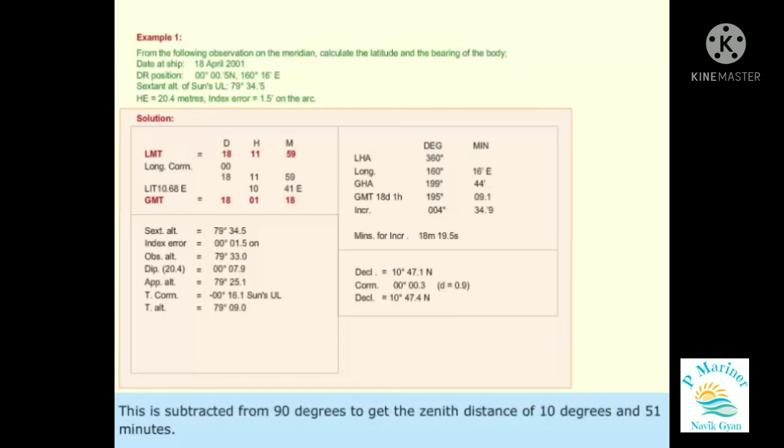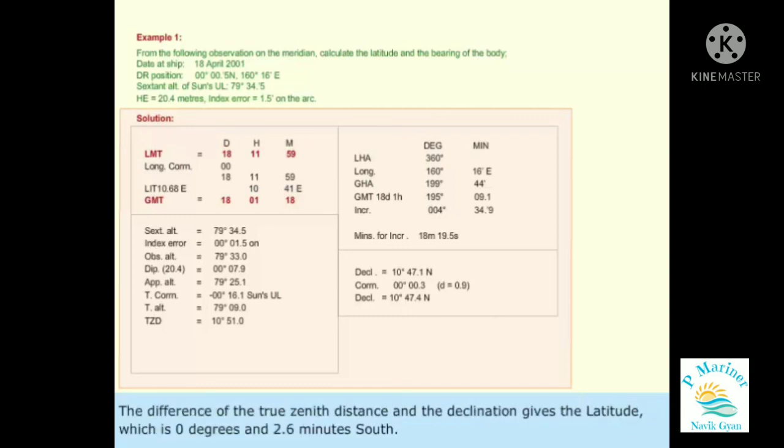This is subtracted from 90 degrees to get the zenith distance of 10 degrees and 51 minutes. Difference of true zenith distance and the declination gives the latitude, which is zero degrees and 2.6 minutes south.